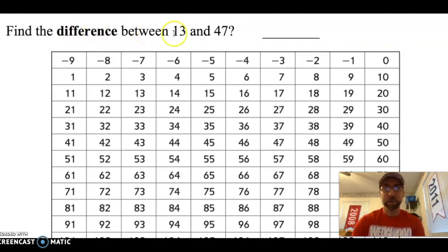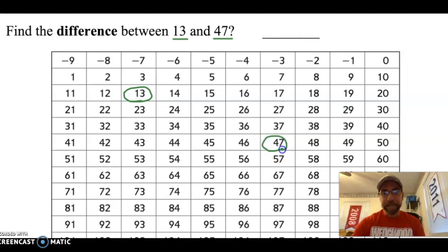This time we're going to use our newly learned vocabulary word. Find the difference between 13 and 47. Step one. I want to find these two numbers on my number grid and circle them. So go ahead and do that now. Find the number 13 and put a circle around it and find the number 47 and put a circle around that. If you need to hit the pause button, go ahead and do it.